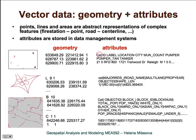Each line can have many attributes. Here we have attributes assigned to areas. This is an example from census data, which has a very large number of attributes for each census block. In some of the other courses, you will be working with the census data in great detail.